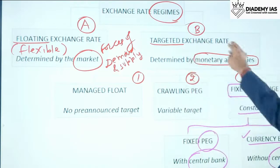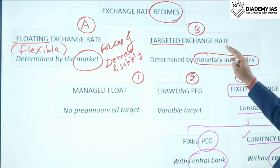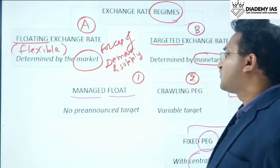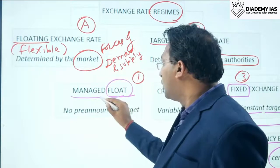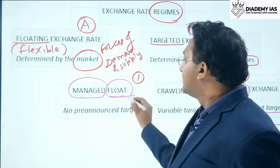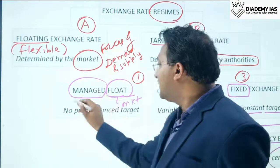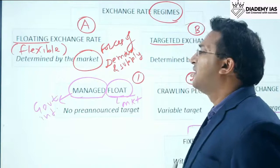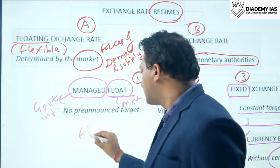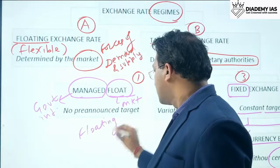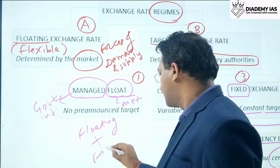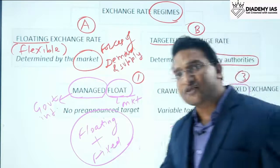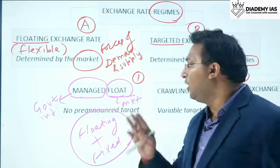Coming back to targeted exchange rate — the second type is managed float. There is a word 'float' and a word 'managed.' Float means market-based; managed means there is some government intervention. Managed float is a combination of floating exchange rate and fixed exchange rate — both market forces and the government work together.